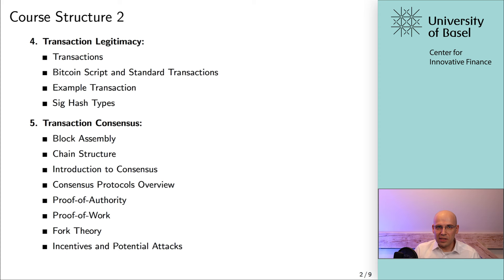Section five turns to the question of how we can achieve consensus in a decentralized network. We look at the concept of blocks, how they are assembled, talk about the chain structure and why it is important, introduce various consensus protocols, and talk about forks, game-theoretic incentives, and potential attack vectors.